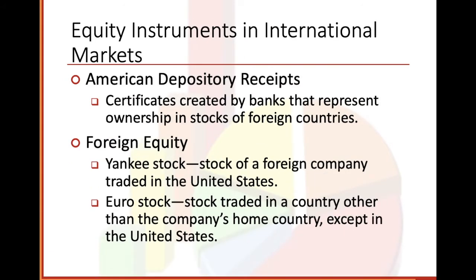Equity instruments in international markets: American depository receipts are certificates created by banks that represent ownership in stocks of foreign countries. Foreign equity includes Yankee stock — stock of a foreign company traded in the United States — and Eurostock, which is stock traded in a country other than the company's home country, except in the United States.